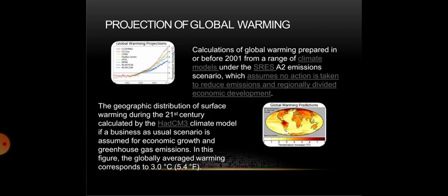The projection of global warming is a calculation prepared in or before 2001 from a range of climate models under the SRES A2 emissions scenario, which assumes no action is taken to reduce emissions. The geographic distribution of surface warming during the 21st century was calculated by the HadCM3 climate model. If a business-as-usual scenario is assumed for economic growth and greenhouse gas emissions, the globally averaged warming corresponds to 3 degrees Celsius, or 5.4 degrees Fahrenheit.